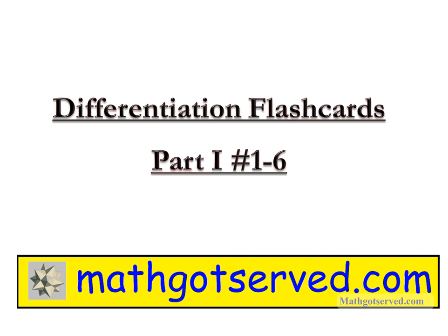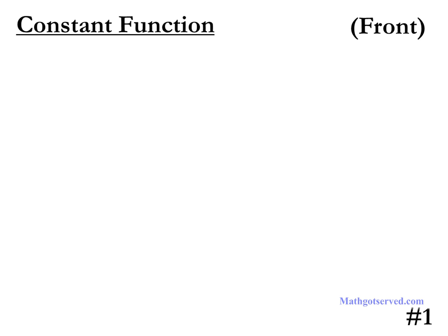Let's go ahead and take a look at the first formula. Before we start, I'd like to go over some critical components of these flashcards so you can know the orientation of where I position certain things. On the upper left corner is the name of the function we're going to be learning the differentiation formula for. On the upper right corner we have the orientation of the card — it's either the front or the back. And on the lower right corner you have the number assigned to each index card. For these flashcards we're going from flashcard 1 all the way to 6.